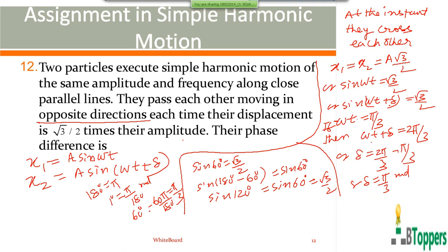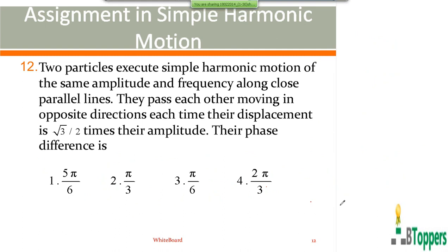Those who want to copy the solution can take a pause and copy. There is also an alternate method: expand sin(omega·t + delta) as sin(omega·t)cos(delta) + cos(omega·t)sin(delta), substitute sin(omega·t) = √3/2, and solve for delta — but that procedure is lengthier. For question number 12, the second option is the answer.